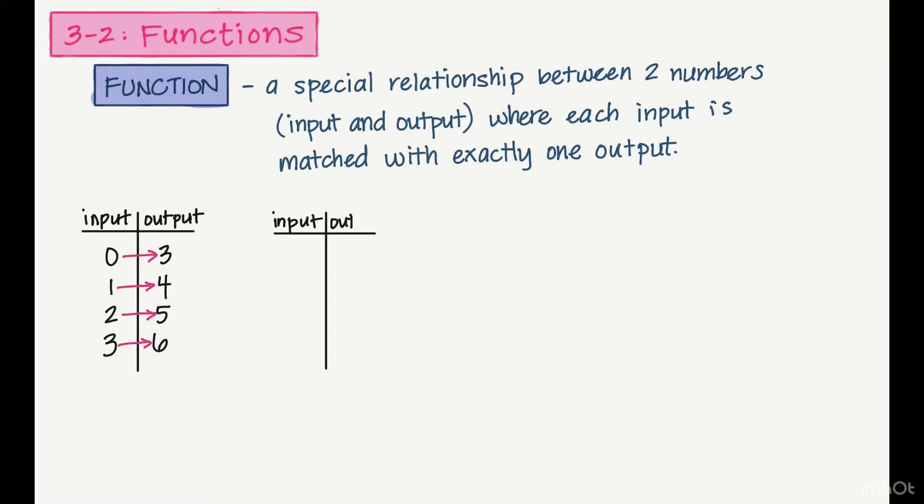Let me show you another example. This time the input will be 0, 1, and 3, and in the output I have 4 numbers: 2, 4, 6, and 8. Zero is paired with 2, and it's also paired with 4. One is paired with 6, and 3 is paired with 8. Now because 0 is matching with two different outputs, this is not a function.